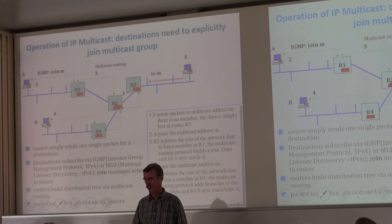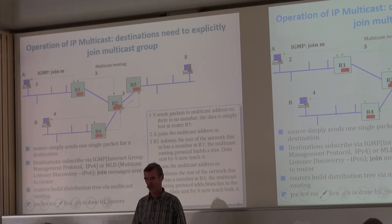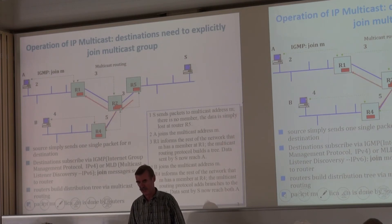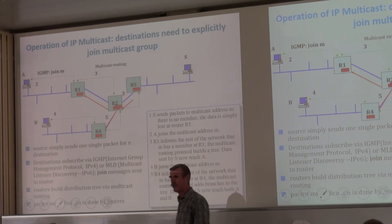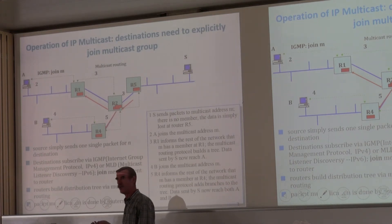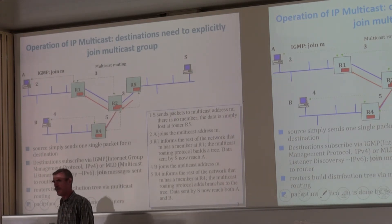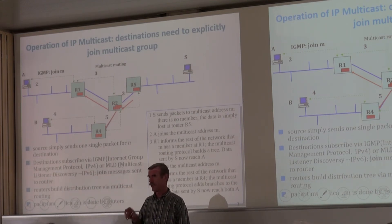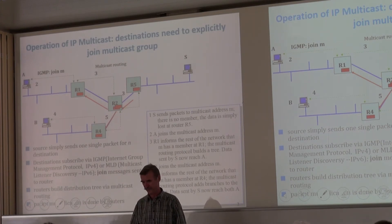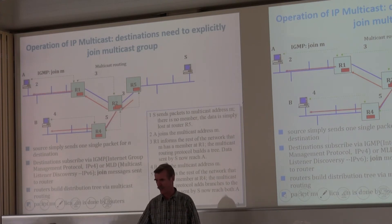When S sends a packet, R5 forwards to R2. R2 now sends it both to R1 and to R4 — that's new compared to unicast forwarding. Here we forward it twice, meaning the router does the duplication of packets.